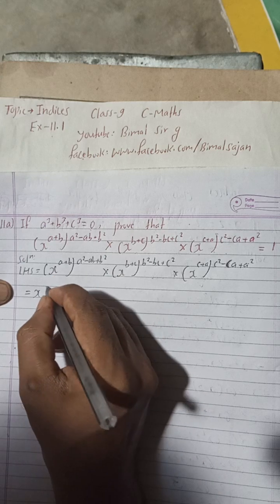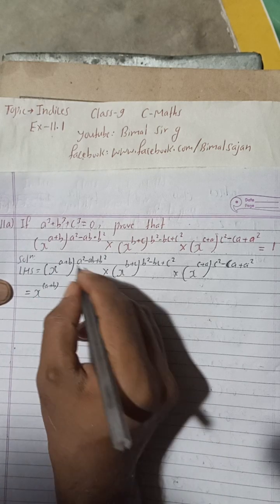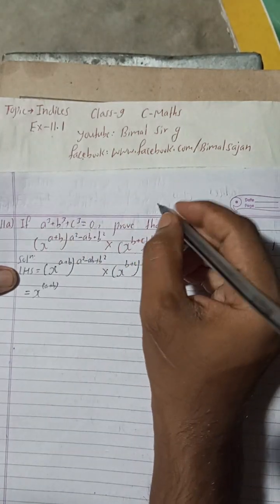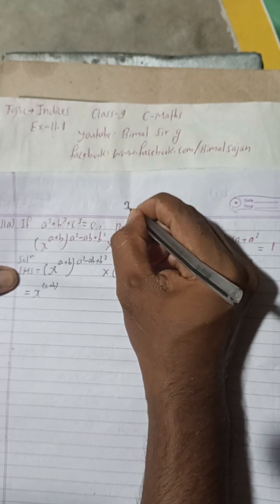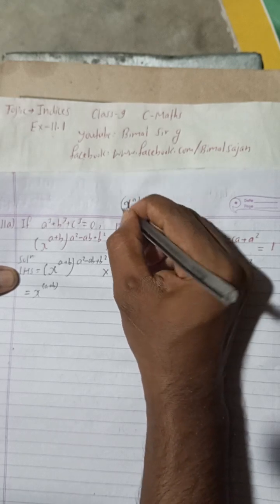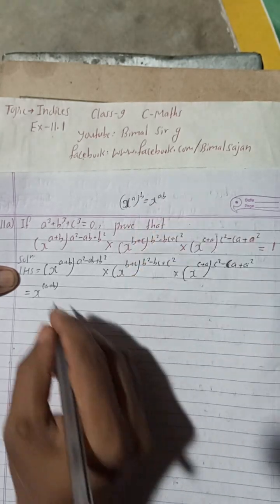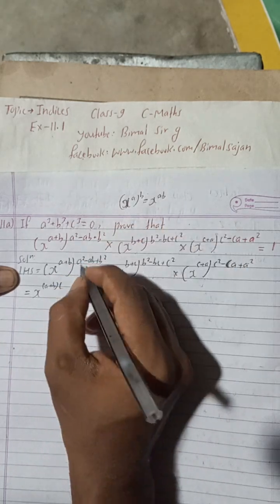Now this can be written as x to the power a+b, and this power is there. So one formula there is, I'm going to write it here. Suppose x^a is there and again there is whole power, then we can write it as x^(a×b). This is the formula I am going to apply here.